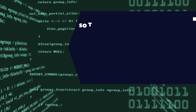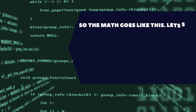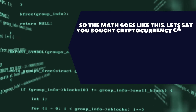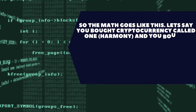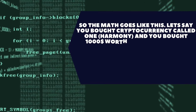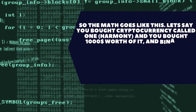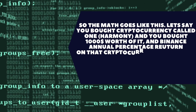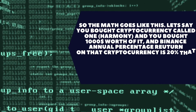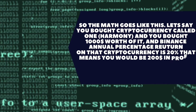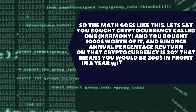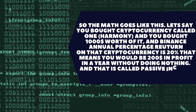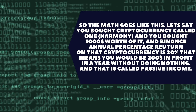So the math goes like this. Let's say you bought a cryptocurrency called One, Harmony, and you bought $1000 worth of it, and Binance annual percentage return on that cryptocurrency is 20% — that means you would make $200 of profit in a year, without doing anything. And that, my friends, is called passive income.